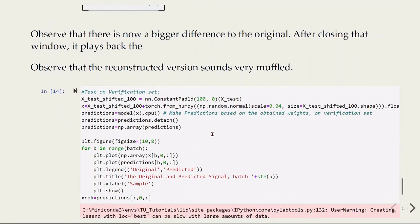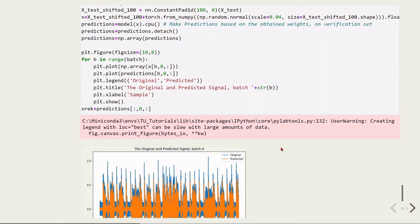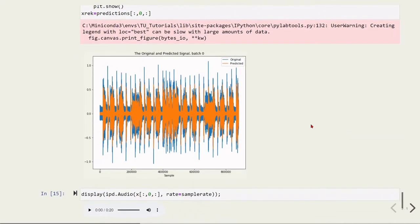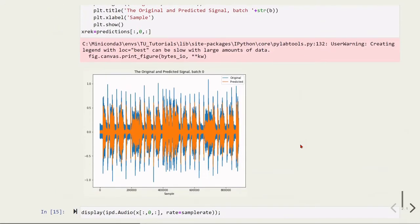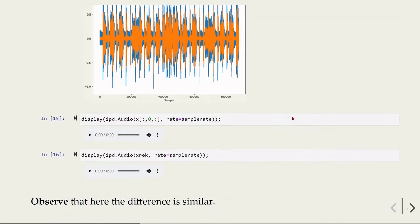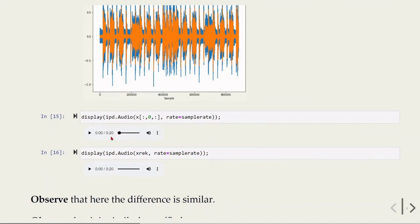We can also test the model using a different file that was not used to train the model. In this case, it's the other channel. We used one channel to train and we tested our model with the training set. But now we are using the other channel. Here is the original and the predicted signal and we can also listen.